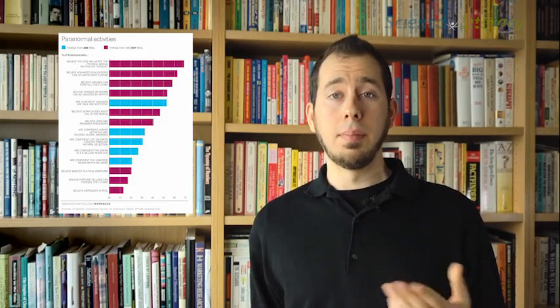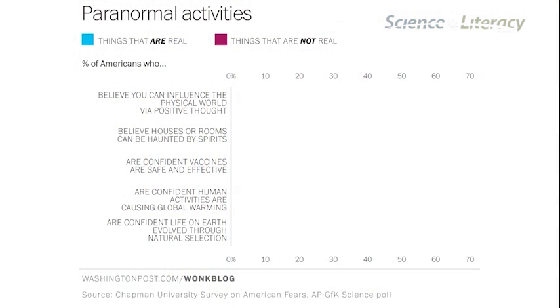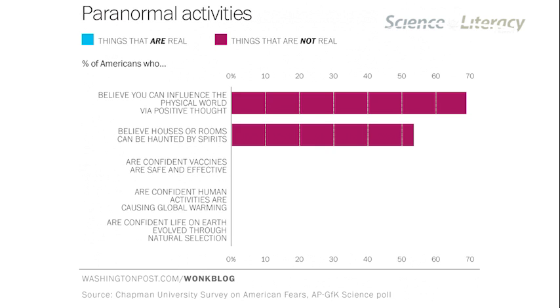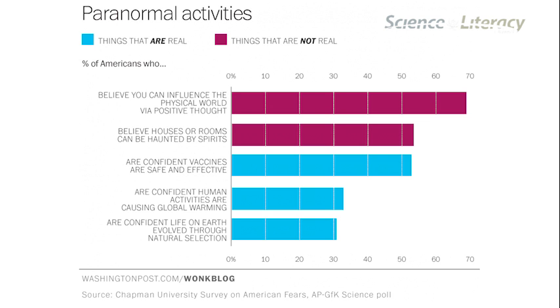For example, a recent survey on the fears and beliefs of Americans found a disconcerting tendency to believe in paranormal phenomena, such as believing that thoughts can metaphysically affect the physical world, or that houses and rooms are haunted by spirits, and perhaps an even more disconcerting tendency to reject scientifically verified models of reality, such as evolution by natural selection, anthropogenic or man-made climate change, or that vaccines are safe and effective.